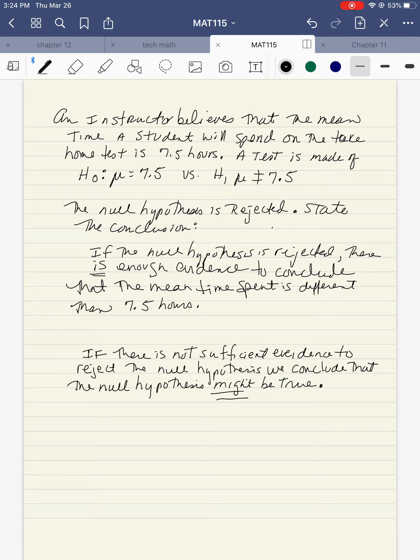An instructor believes that the mean time a student will spend on a take-home test is 7.5 hours. A test is made, and now the teacher believes it's not 7.5 hours. So the null hypothesis is the mean equals 7.5, and the alternative is that the mean does not equal 7.5.